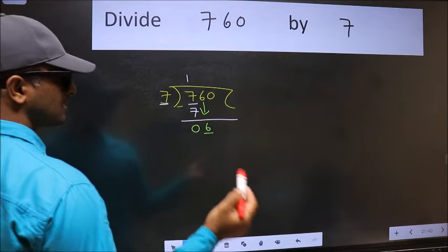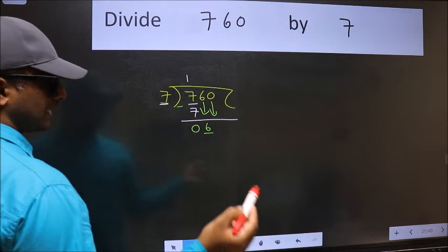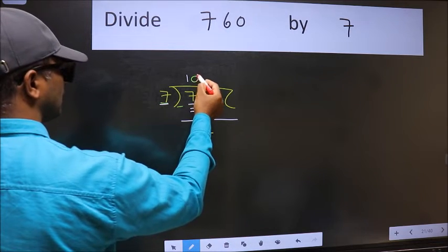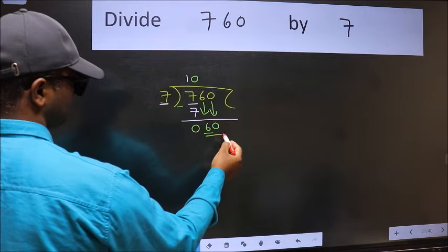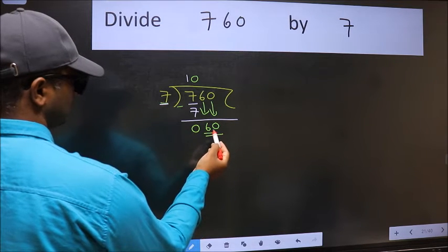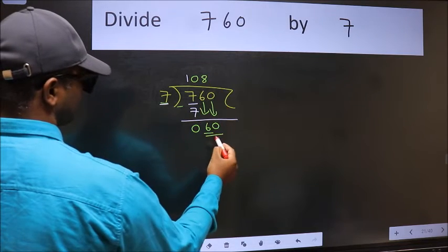So we should bring down the second number. And the rule to bring down the second number is we should put 0 here. Then only we can bring this number down. Now 60. A number close to 60 in the 7 table is 7 times 8, 56.